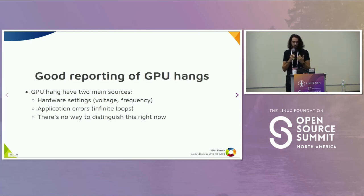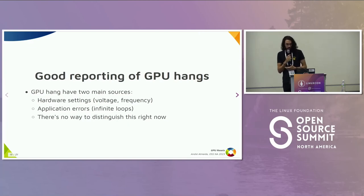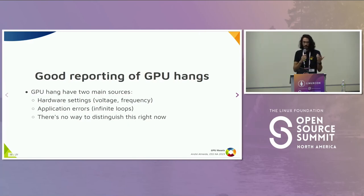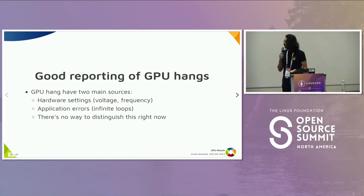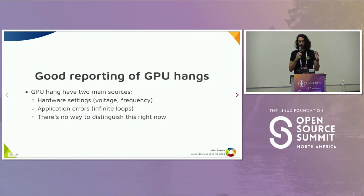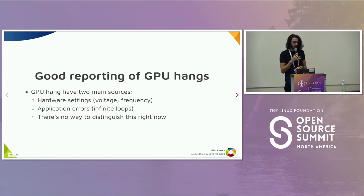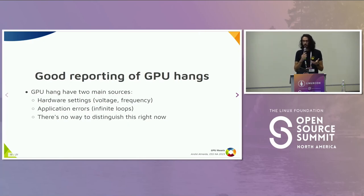GPU hangs have two main sources on AMD. It can be hardware settings — so if you change the voltage or the frequency of the GPU in a bad way, it can hang the GPU. And of course application errors like infinite loops. Right now there's no way to distinguish one from another, and you can see that this is really bad, because if you submit a bug report for a game, it might not be the game itself that crashed, but something else that decided to change the frequency of the GPU and crash it.